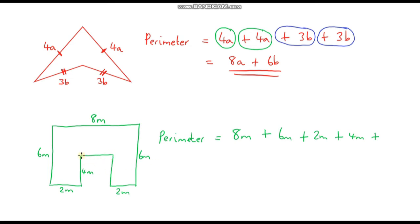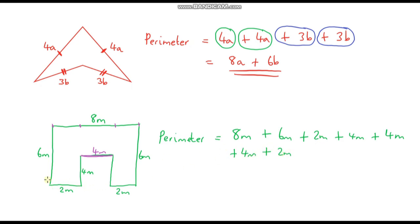Now we need to work out this remaining side length. The top is 8m and the two horizontal sections on the step are each 2m. So the middle section that's left over is 8m minus 2m minus 2m, which equals 4m. We add on 4m, then the base section of 4m, then plus 2m, and finally plus 6m.